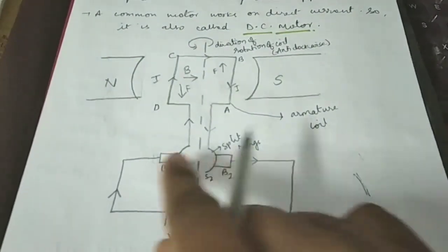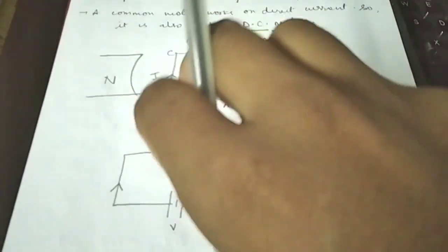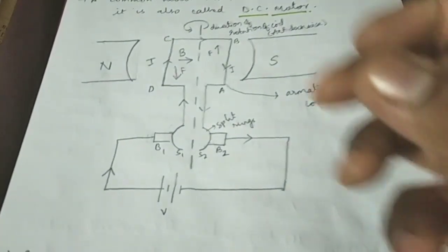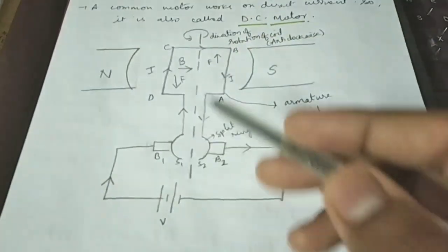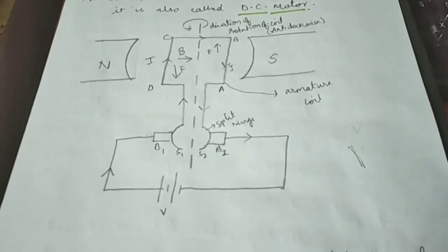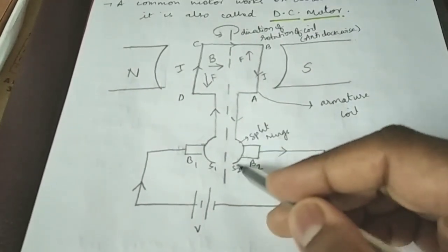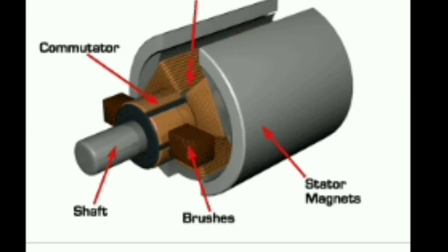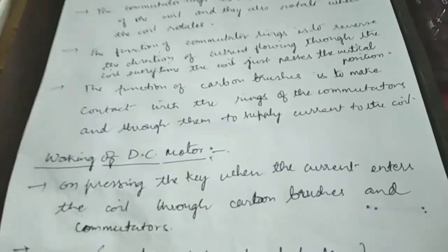The function of the carbon brushes is to make contact with the rings of the commutator and supply current to the coil. If we don't have carbon brushes, the commutator wire would get twisted and be unable to rotate freely. So carbon brushes allow free rotation of the coil. The current passes through them without resistance — that is the use of carbon brushes.